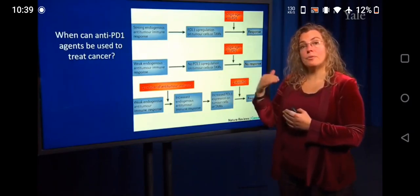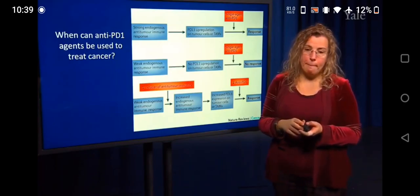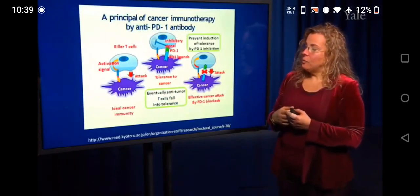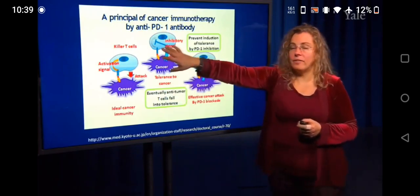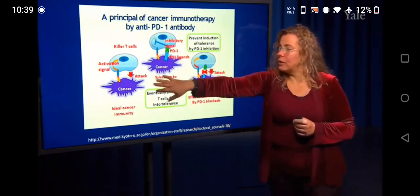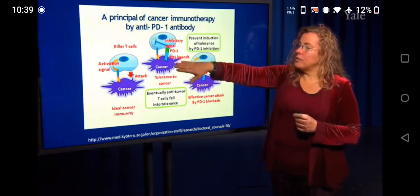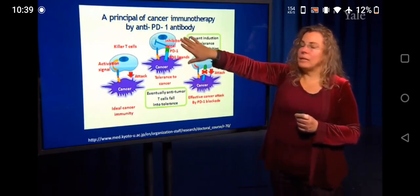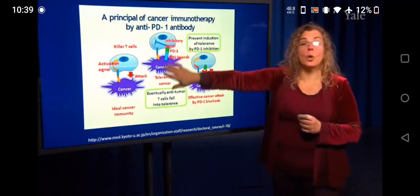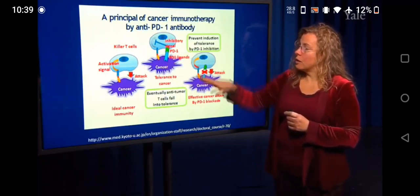That's shown again in this picture. Ideally, you have a cytotoxic killer T cell that's going to kill the cancer cell. If the cancer cell expresses PD-1, that will be an inhibitory signal to the T cell and no killing occurs. If you use the drug to block this interaction, you can allow the T cell to kill the tumor cell.